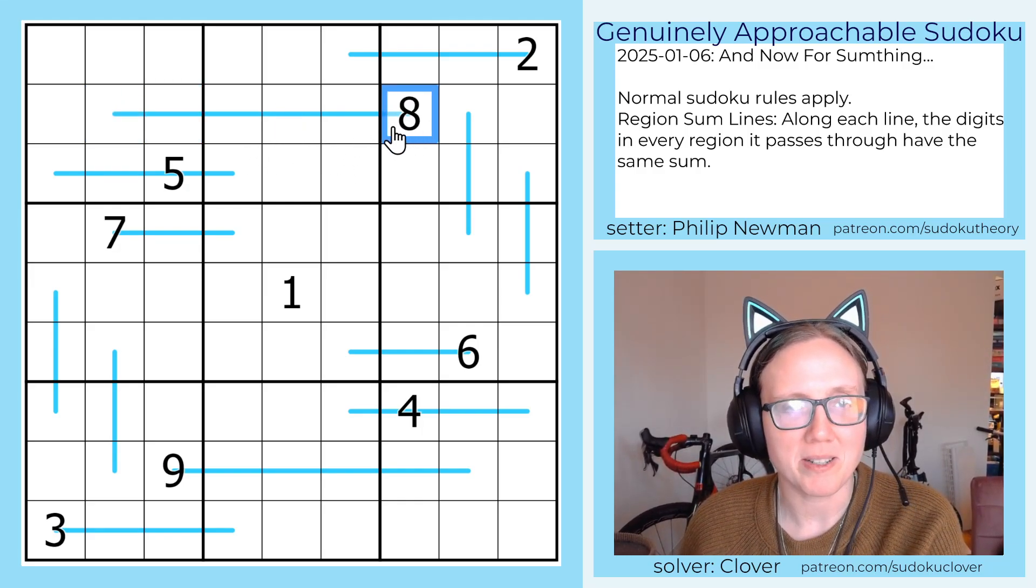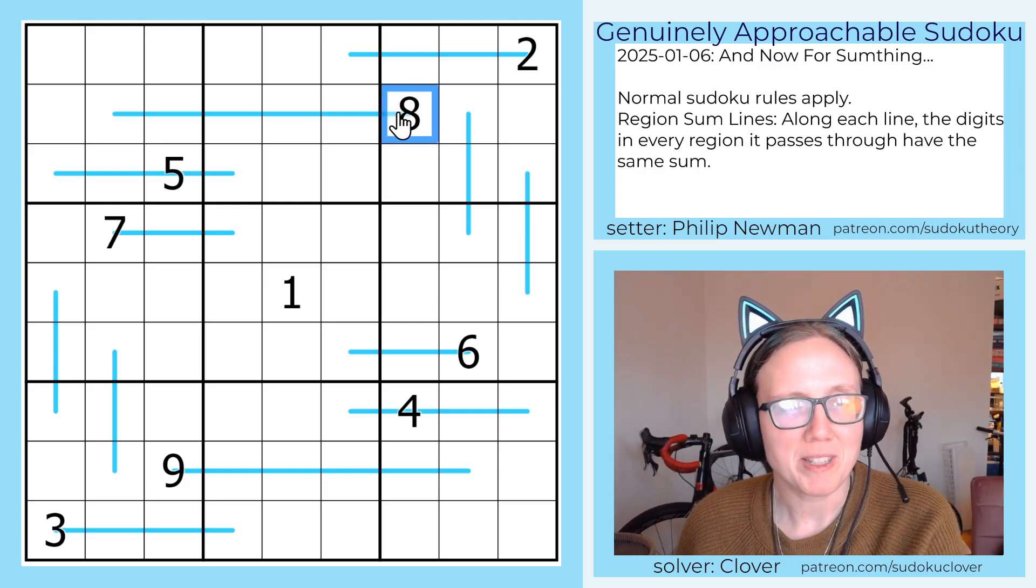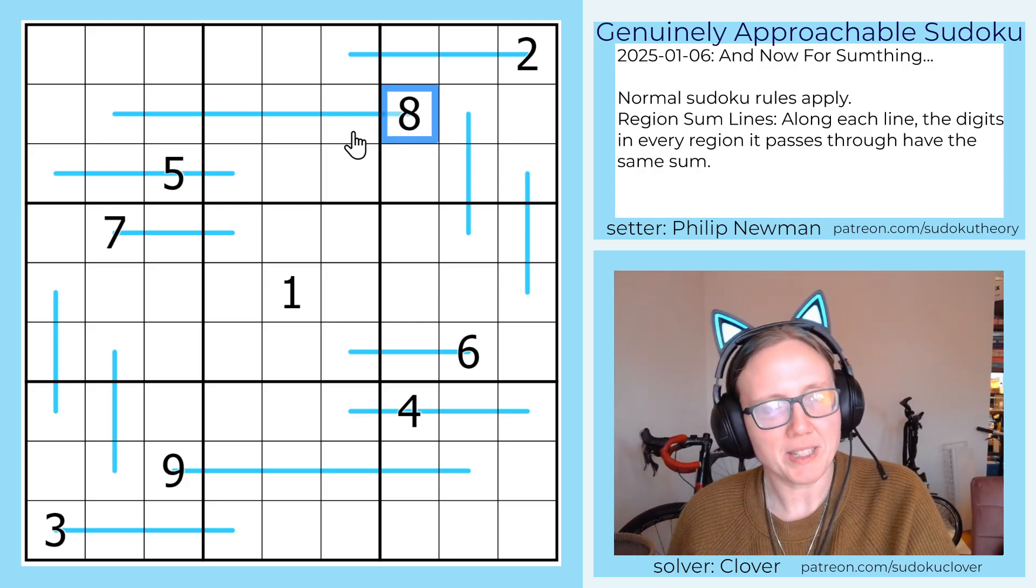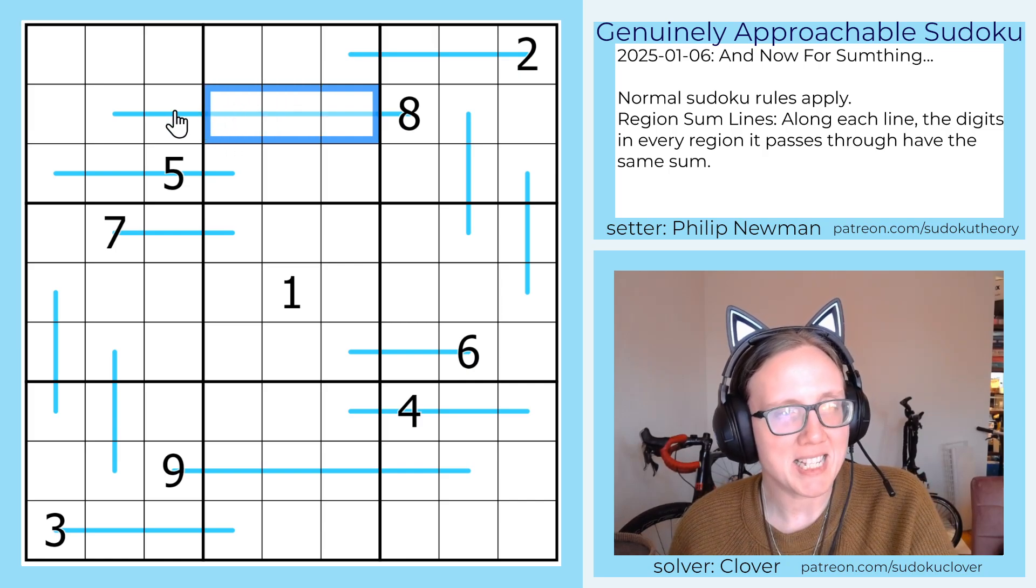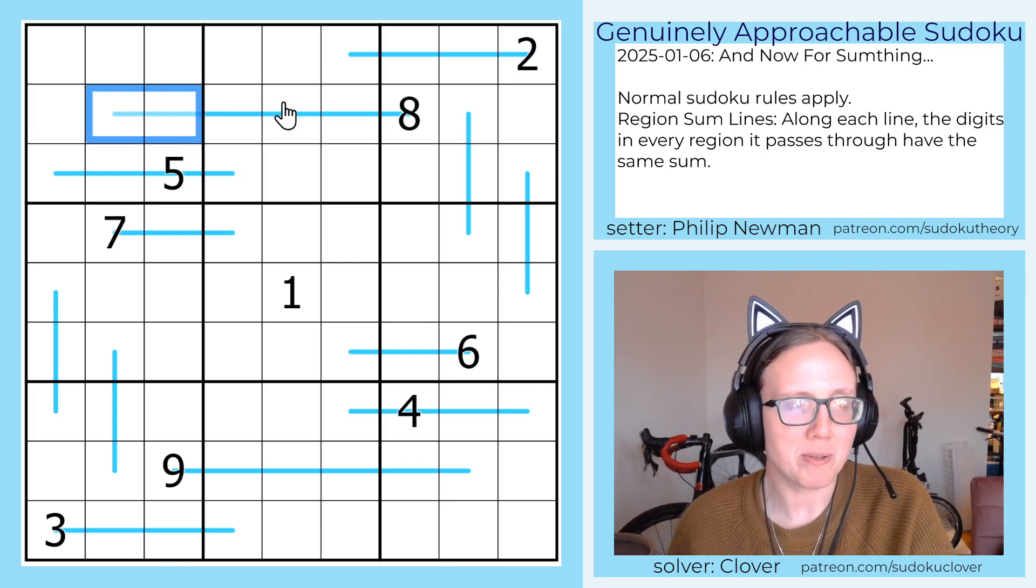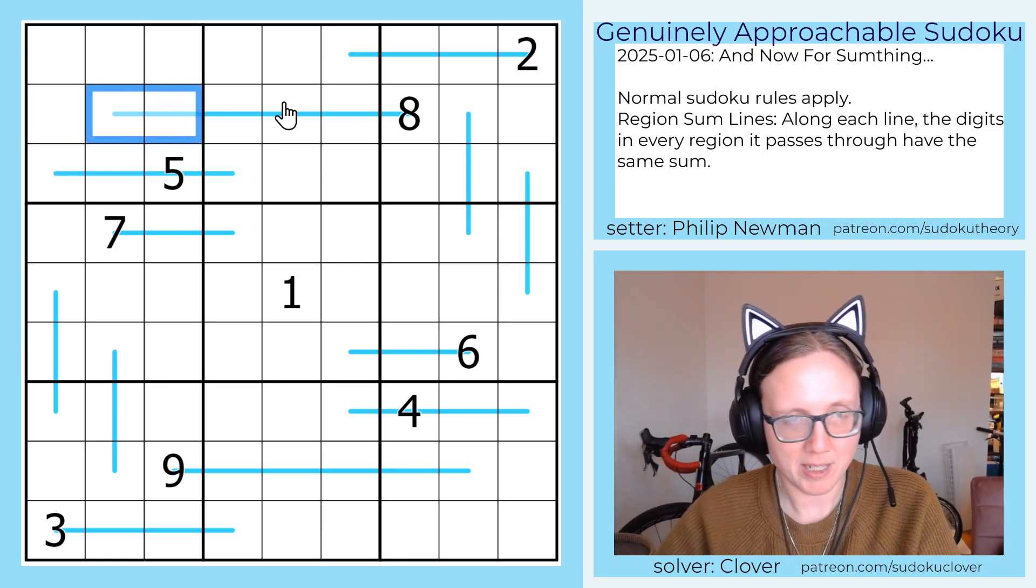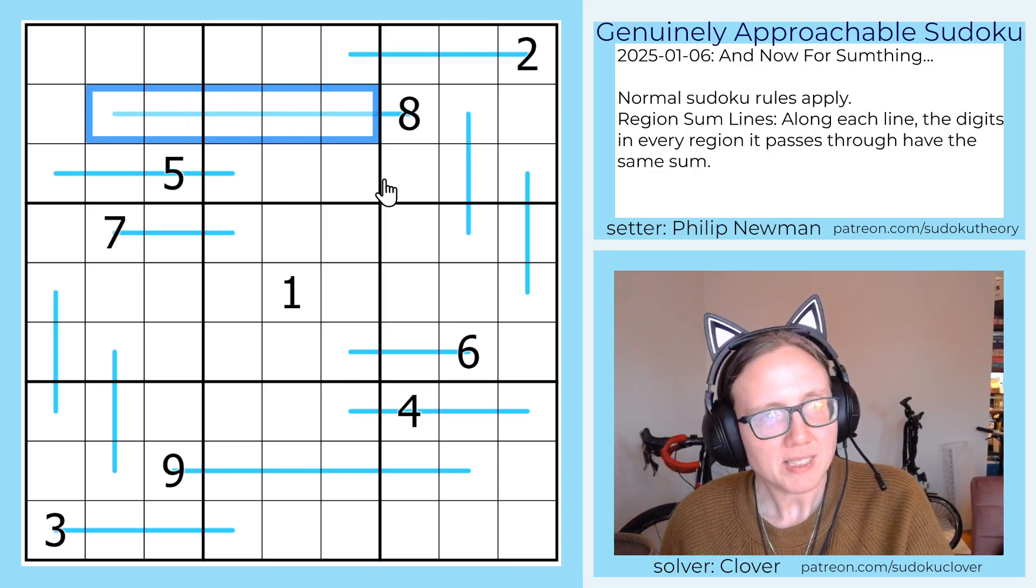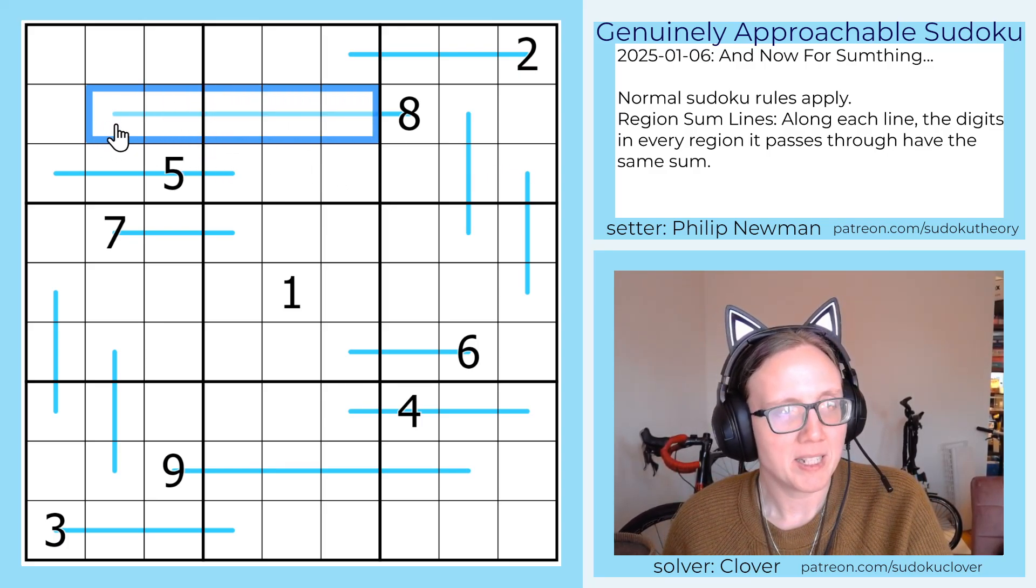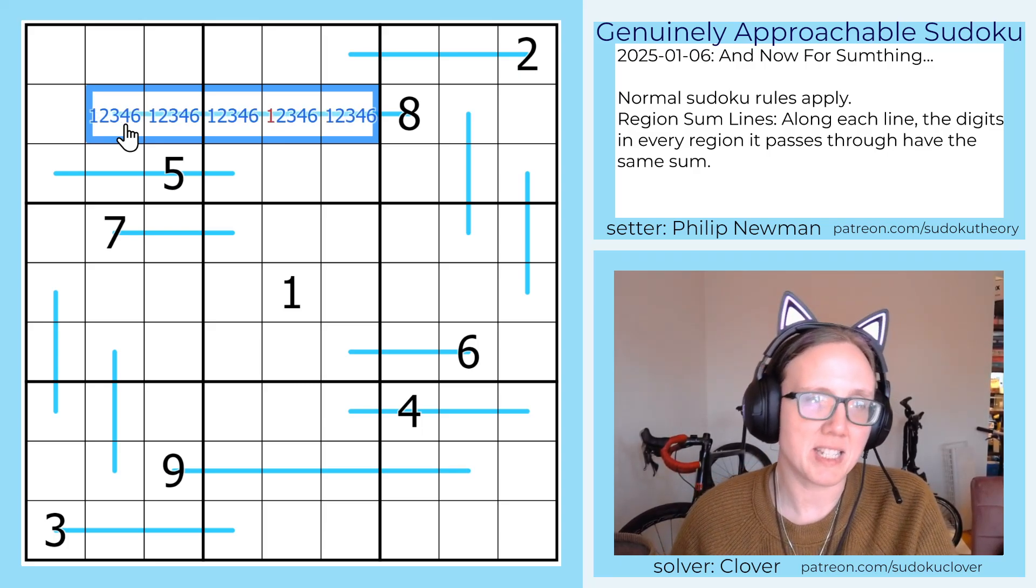There is a region where the line only enters a single cell, and that single cell contains an 8, which tells us the sum of these three digits is 8, and then the sum of these two digits is also 8. That means the sum of these five digits is 16. So that makes them 1, 2, 3, 4, and 6.